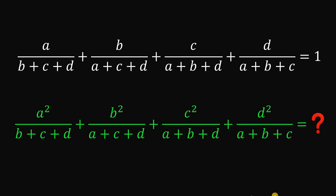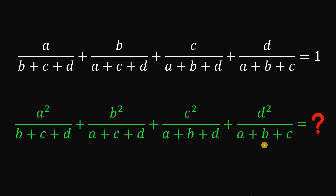Today we will answer a challenge given by one of our followers. The question goes like this: given the equation a over (b+c+d) plus b over (a+c+d) plus c over (a+b+d) plus d over (a+b+c) equals one, the goal is to find the sum a squared over (b+c+d) plus b squared over (a+c+d) plus c squared over (a+b+d) plus d squared over (a+b+c).